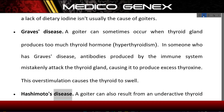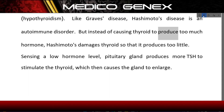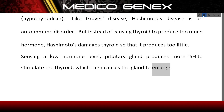Hashimoto's disease: A goiter can also result from an underactive thyroid. Like Graves' disease, Hashimoto's disease is an autoimmune disorder. But instead of causing the thyroid to produce too much hormone, Hashimoto's damages the thyroid so that it produces too little. Sensing a low hormone level, the pituitary gland produces more TSH to stimulate the thyroid, which then causes the gland to enlarge.